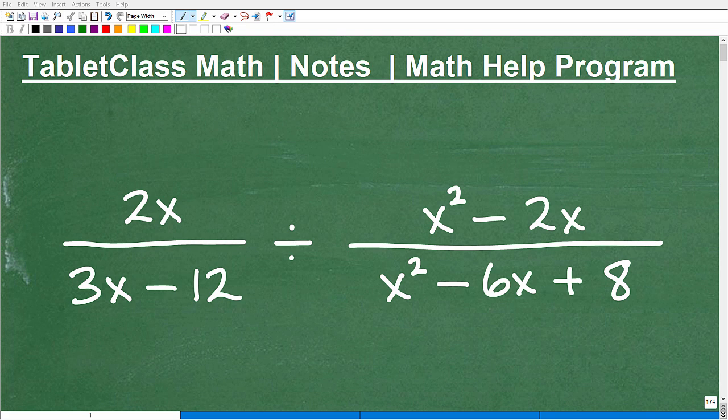Okay, let's go ahead and divide these rational expressions here. So we have 2x over 3x minus 12, and we're going to divide it by x squared minus 2x over x squared minus 6x plus 8.